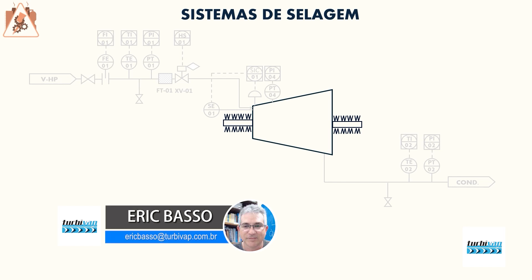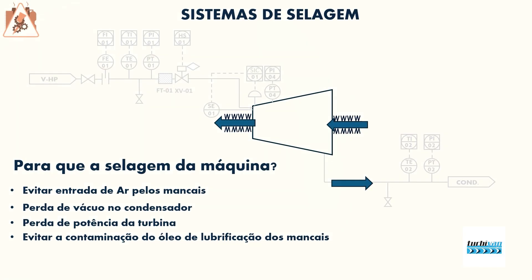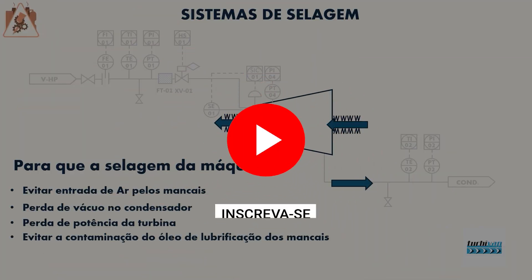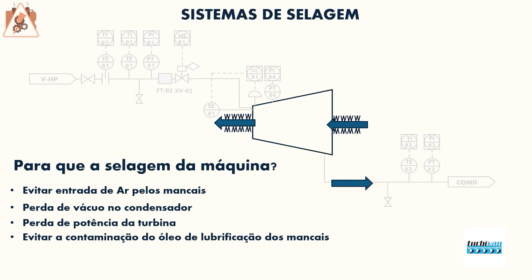For a back pressure turbine, the output will be at a pressure above atmospheric pressure. Another function of the sealing system is to avoid contamination of the oil bearing lubrication.